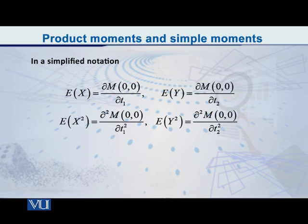Similarly, in order to find the expected value of y, we will take the partial derivative of the MGF with respect to t2, and after doing that, we will put t1 and t2 equal to zero, in order to obtain the expected value of y.